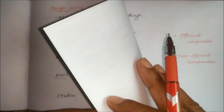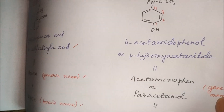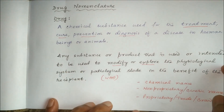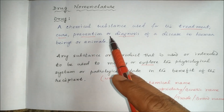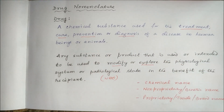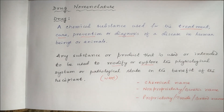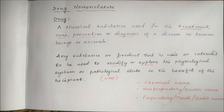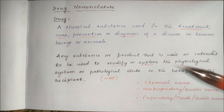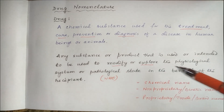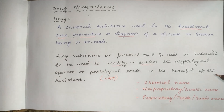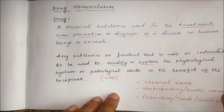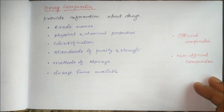The definition of drug: a drug is a substance or chemical substance used for the treatment, cure, prevention, or diagnosis of a disease in human beings or animals. Later, WHO modified the definition because drugs are not only used in pathological states but also in physiological conditions — for example, pregnancy. As per WHO, a drug is any substance or product used or intended to modify or explore the physiological system or pathological state for the benefit of the recipient.